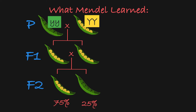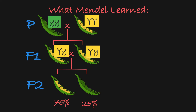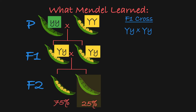The F1 generation is made up solely of plants that are heterozygous, carrying a yellow allele from one parent and a green allele from the other. All of these plants have yellow peas because the yellow allele is dominant to the green recessive allele. Then, when you cross two F1 plants, you see that most of the offspring have yellow peas, but some do have green peas.